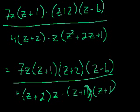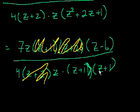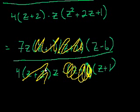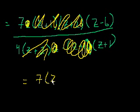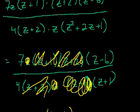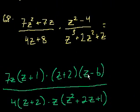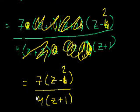Now the fun part — we start canceling, assuming the denominator never equals zero. The z plus 2 in the numerator cancels with z plus 2 in the denominator. One z plus 1 cancels with a z plus 1. And the z cancels with the z. We're left with 7 times z minus 2 over 4 times z plus 1. I initially wrote z minus 6 by mistake — z squared minus 4 is z plus 2 times z minus 2, so it's z minus 2 right there. That is choice A. Sorry about that error.